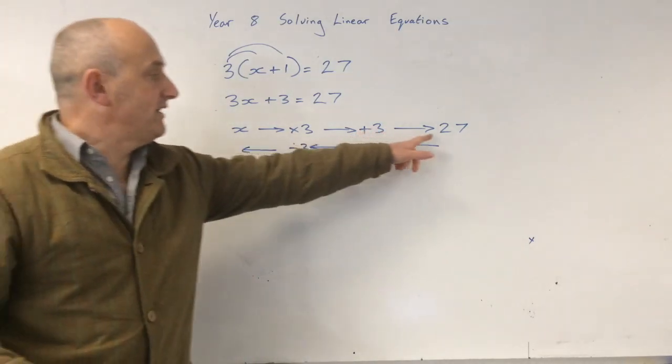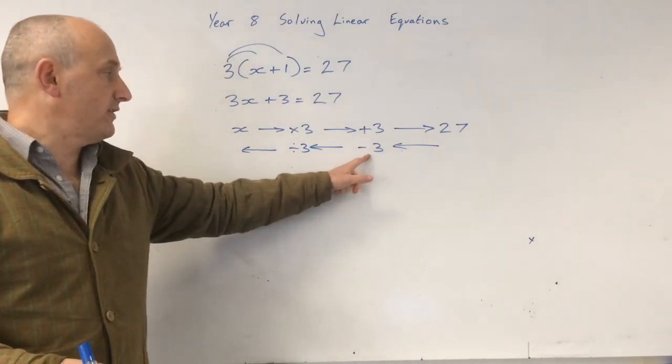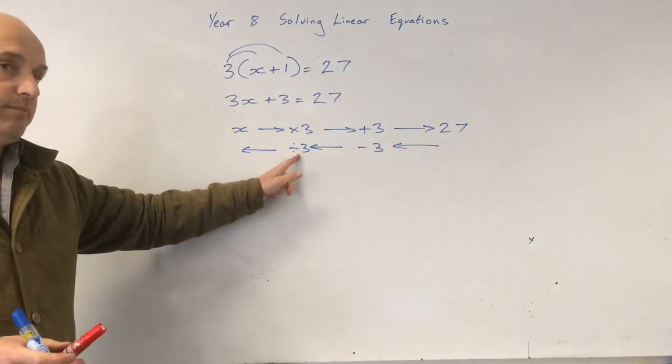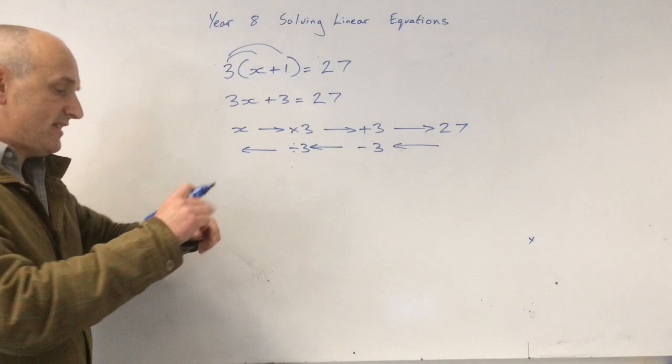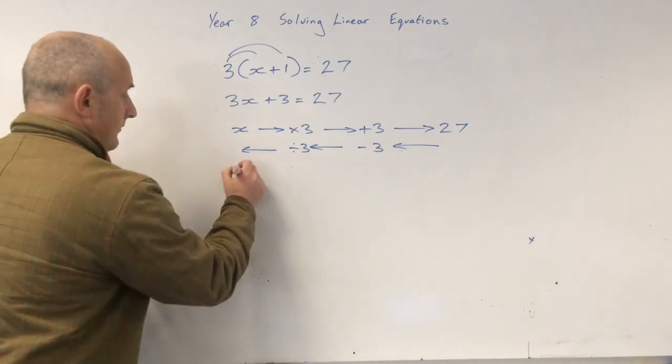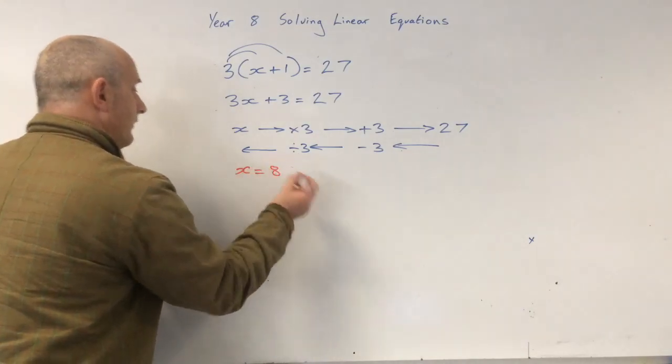Minus 3, divide by 3. So 27 minus 3 is 24, divided by 3. 24 divided by 3 is 8. Okay.